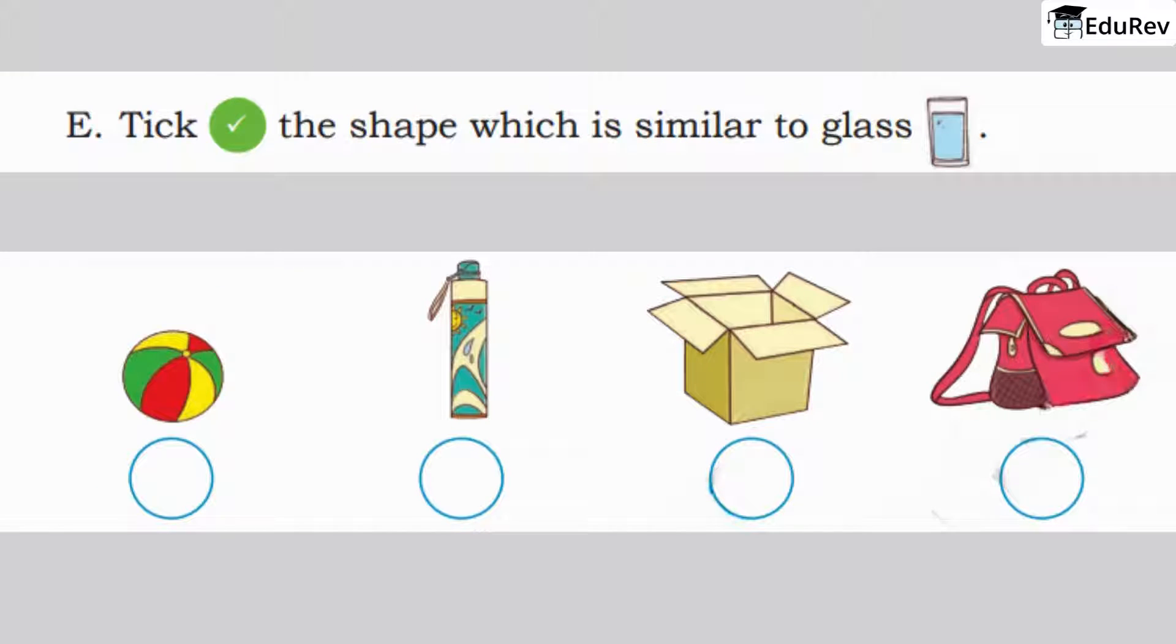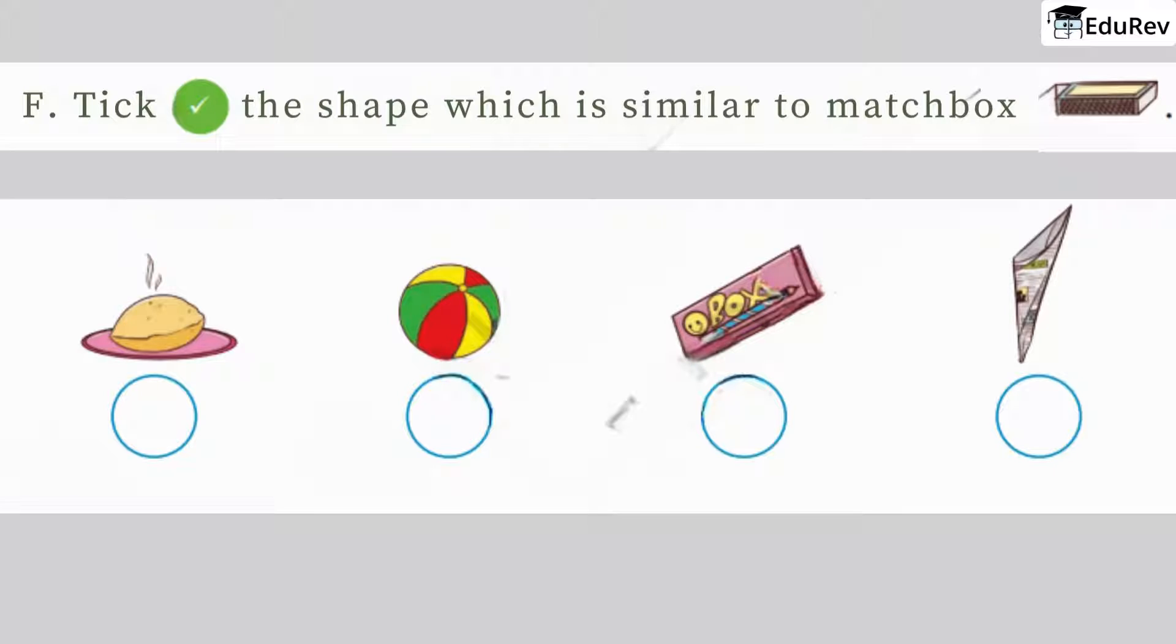Tick the shape which is similar to glass. If we look properly, the glass is long and it looks like this bottle. Next, tick the shape which is similar to matchbox. Yes, the pencil box is similar to the matchbox.